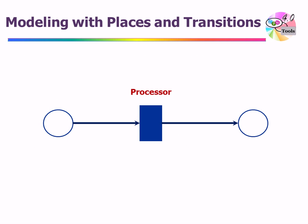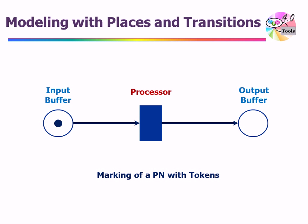Let's look at some examples. Here we have the same structure, but now the transition represents a processor — something that processes an incoming job. That incoming job comes to this processor from an input buffer, so we modeled that input buffer as an input place to this transition. And once the job is processed, it goes into an output buffer, which is modeled as a place output to this processor. Now, if we have a job that comes into this place, we represent that with the help of a token — a black dot that we place in this place. So with this token placed in the input buffer place, what we are saying is that a job is available for this processor to process. We call this the marking of a Petri Net.